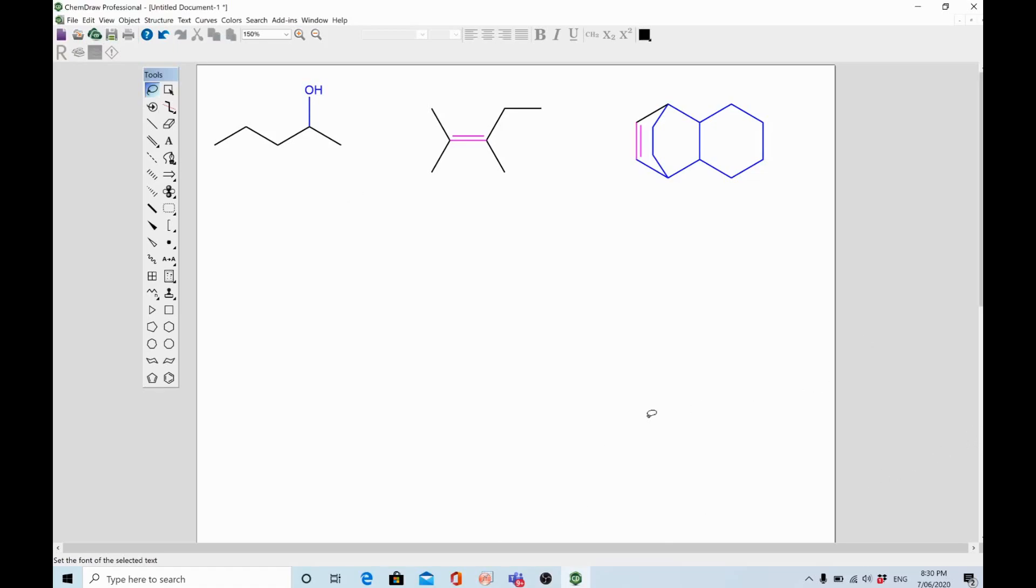Without wasting your time much, let's start with the first example. I have highlighted these molecules with different colors. The first one is blue color - that shows this is an alcohol. The second one is alkene. The third one is also alkene, but it's a bicyclic compound. Let's start with the retrosynthetic analysis of alcohol. We need to select an area where we can use a disconnection approach.